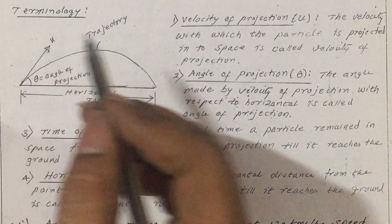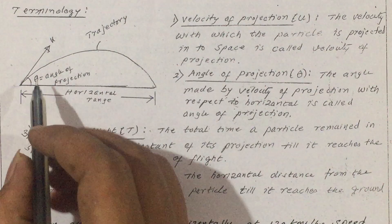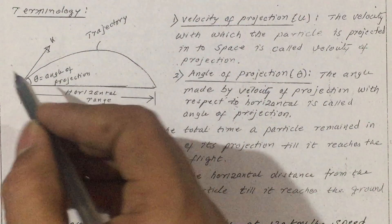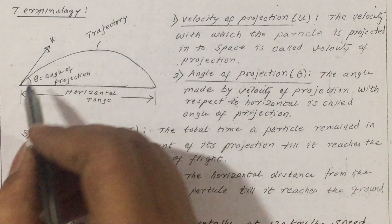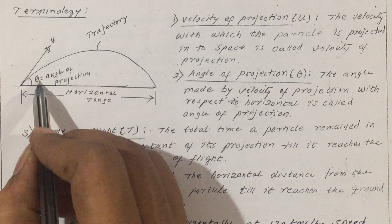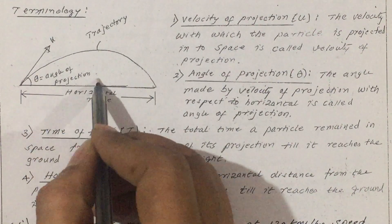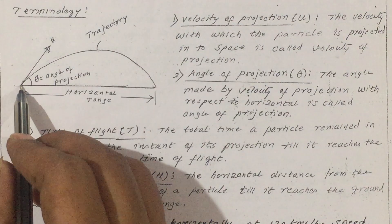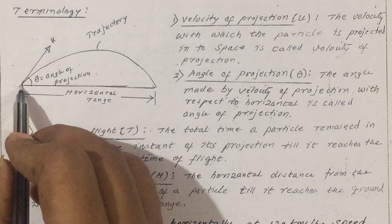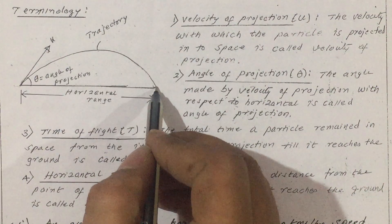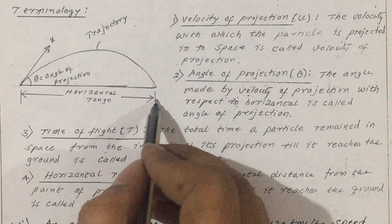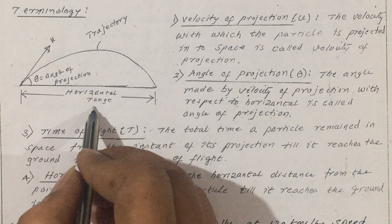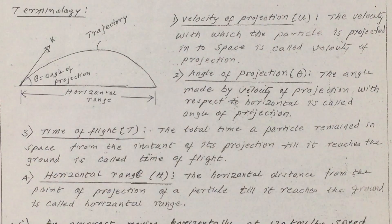The initial velocity is u, and the angle with which I thrown the particle into space, I am going to call that as theta — that is the angle of projection. Then from the initial point to the final point, the horizontal distance, I am going to call that as horizontal range.